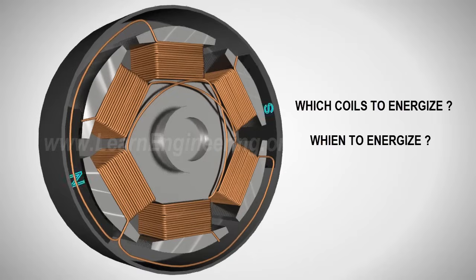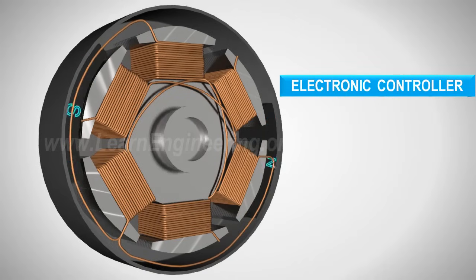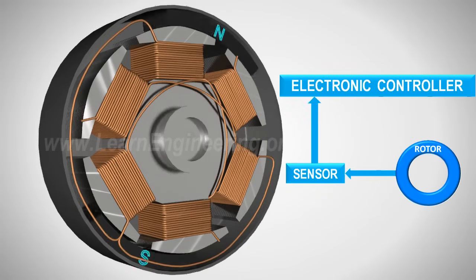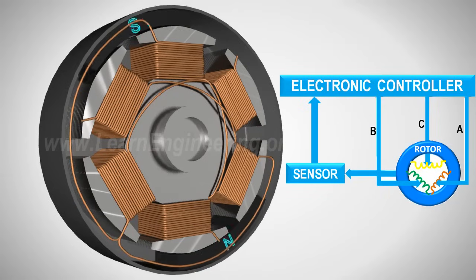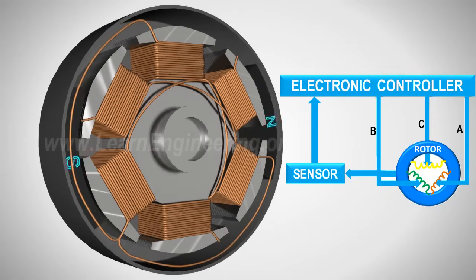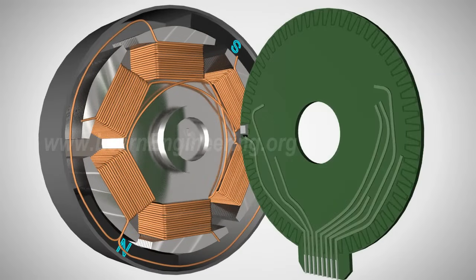In a BLDC, we use an electronic controller for this purpose. A sensor determines the position of the rotor and based on this information, the controller decides which coils to energize. Most often, a Hall effect sensor is used for this purpose.